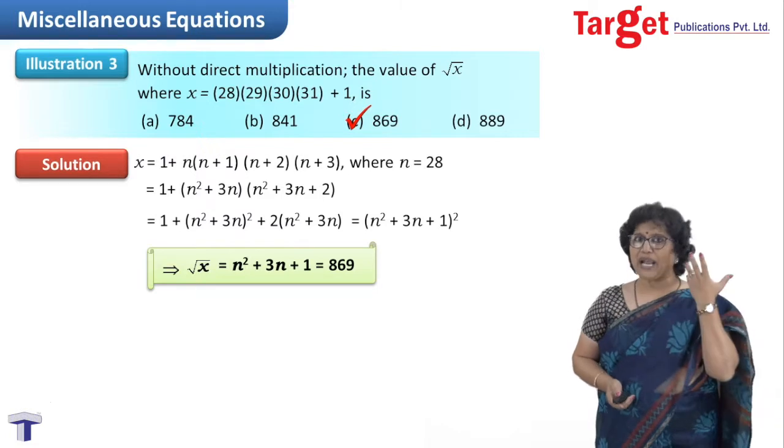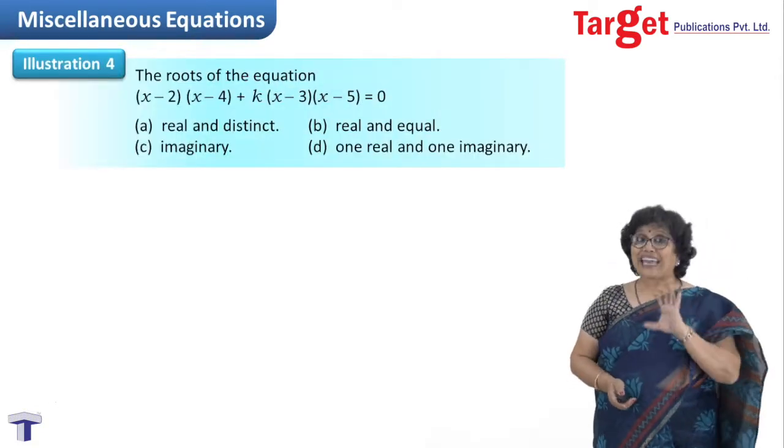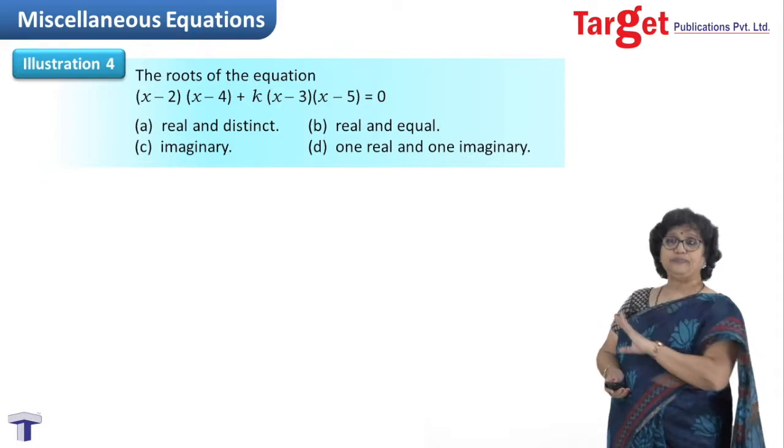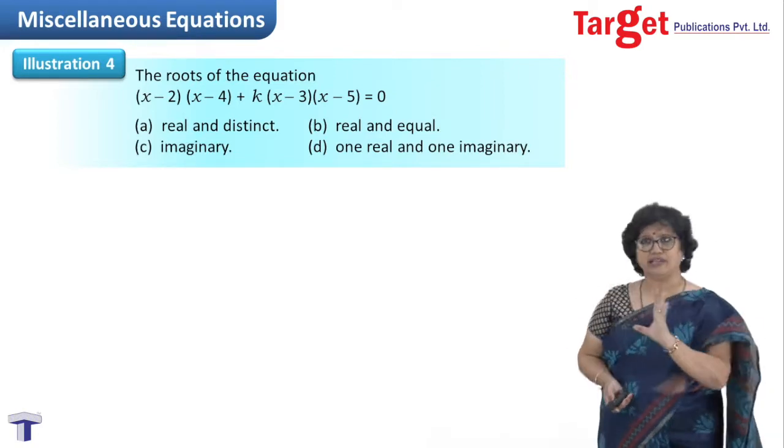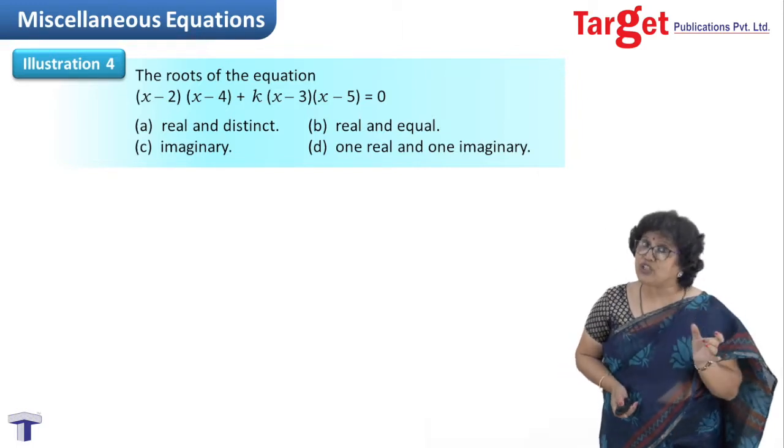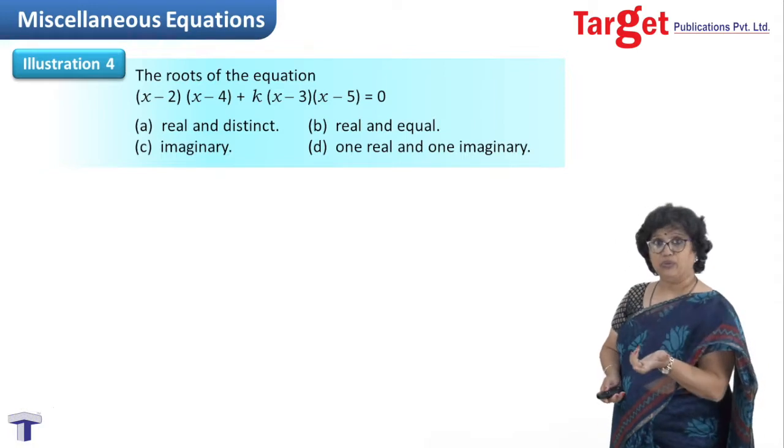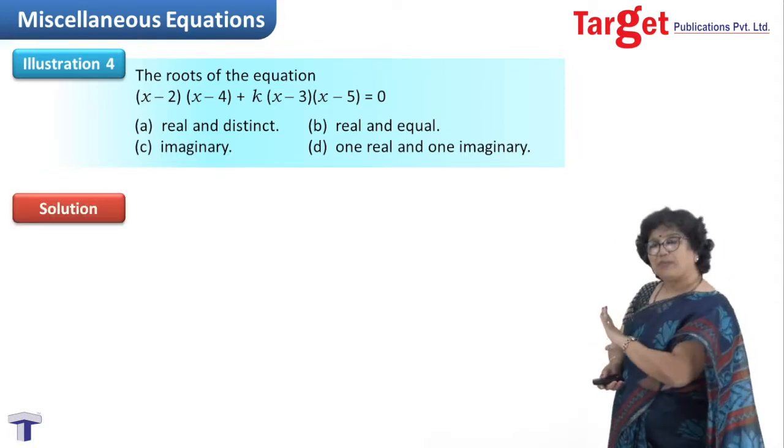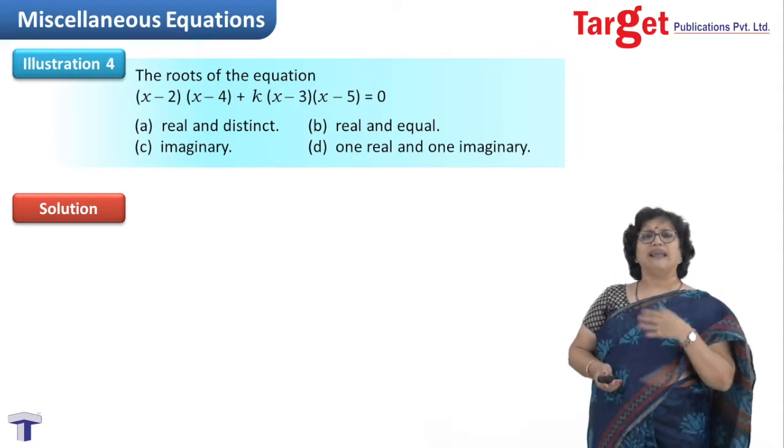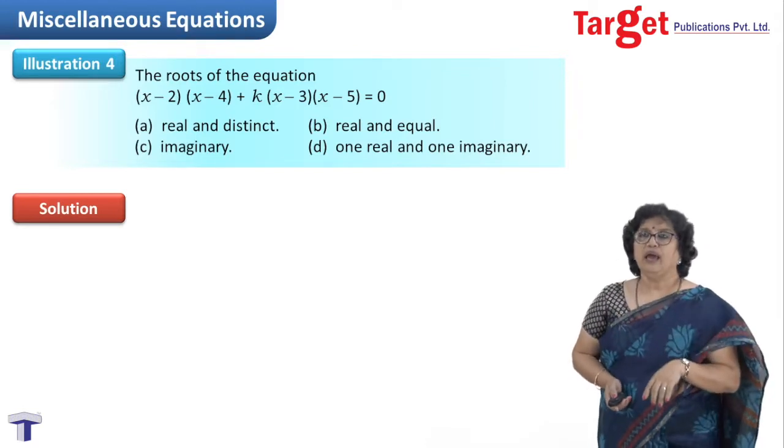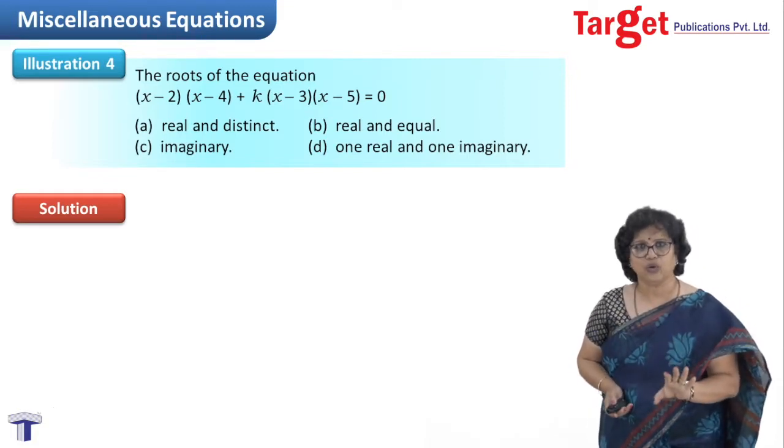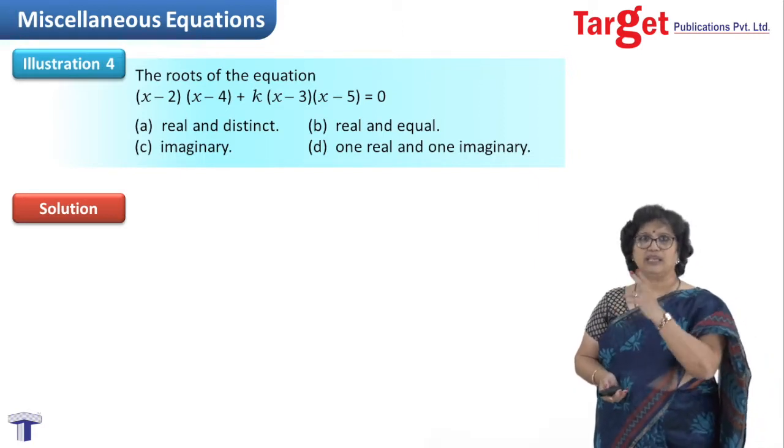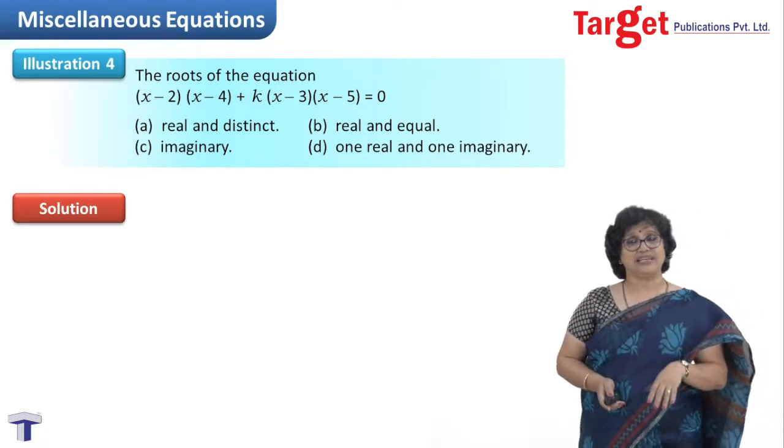One more question and we may end our session. The roots of the equation (x-2)(x-4) + k(x-3)(x-5) = 0 are: distinct and real, real and equal, imaginary, or one real and one imaginary. (x-2)(x-4) gives a quadratic polynomial, and (x-3)(x-5) is also quadratic, so the left-hand side is a quadratic polynomial overall. For a quadratic equation, one real and one imaginary is ruled out - that never happens. Either both real or both imaginary. We have to check the remaining three options.